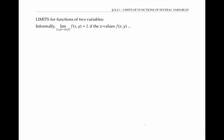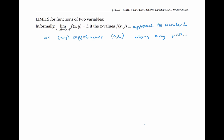For a function of two variables, informally we say that the limit as the point (x, y) approaches (a, b) of f of x, y is the number L, if the z values — denoted by f of x, y — approach L as (x, y) approaches (a, b) along any path whatsoever. There are lots of ways to approach that point: from this direction, from that direction, or even spiraling around. No matter what we do, the z values should approach that same number L. This is an informal definition; you'll see a more formal epsilon-delta definition in the book and in class.